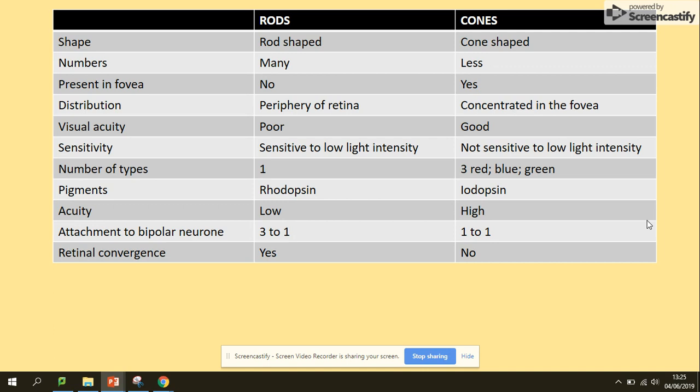Types: rod cells, we've got only one type. In cones we've got three types: red, blue, green, hence we can see in color. Pigments: in the rods we've got rhodopsin, in cones iodopsin.